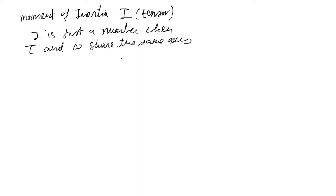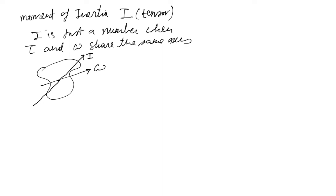For example, if you have a rotating body and you calculate the moment of inertia in a different direction than omega, then I is a full tensor. Moment of inertia depends on the axis you define. First you choose an axis, calculate the moment of inertia tensor around that axis, and then use tau equals I alpha.